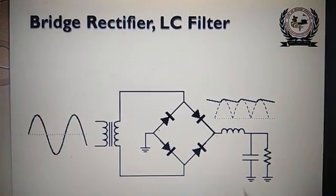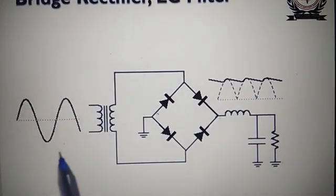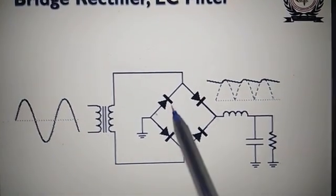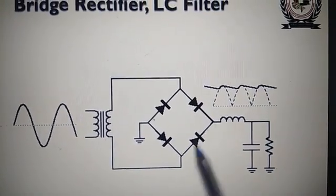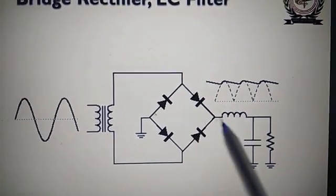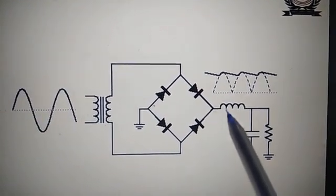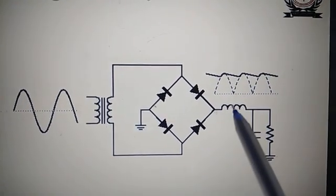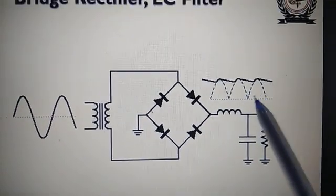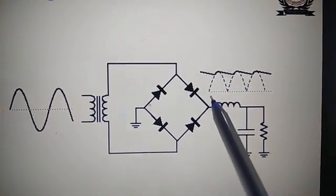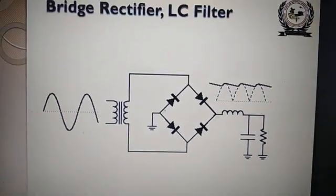The LC filter with a bridge rectifier is shown here. This is the bridge, this is the input waveform, the transformer, and this is the full-wave bridge rectifier. At the output of the rectifier you will get the dotted output waveform. After the L and C combination, you will get a much smoother output — meaning most of the ripples are removed by this LC filter.